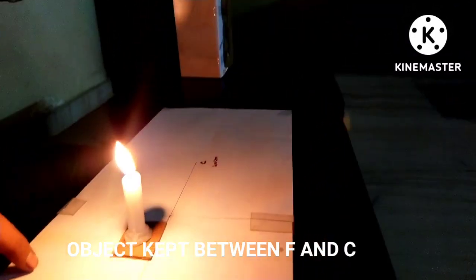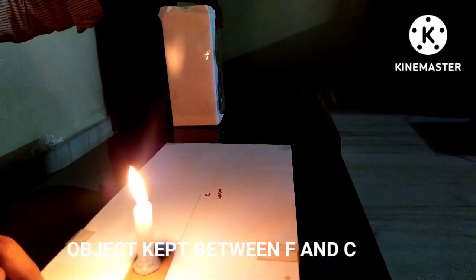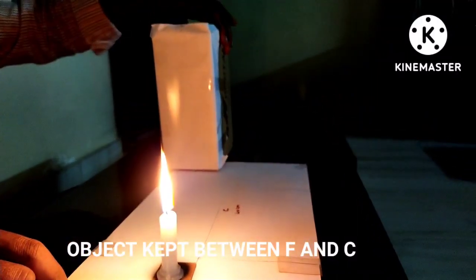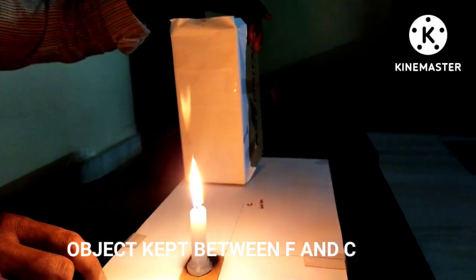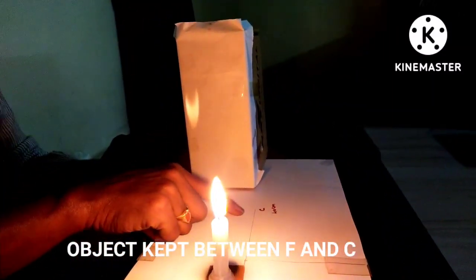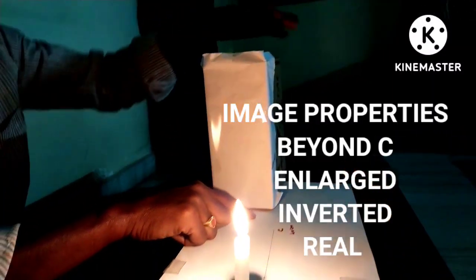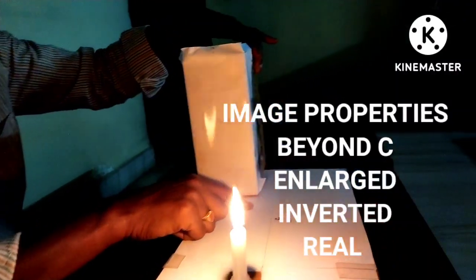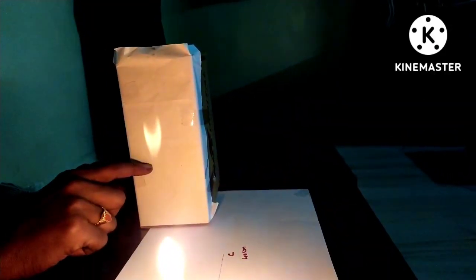Now the object is kept in between F and C. Adjust the screen where the clear image is obtained. So, image obtained beyond C. It is enlarged, inverted, real. Real images are caught on screen.